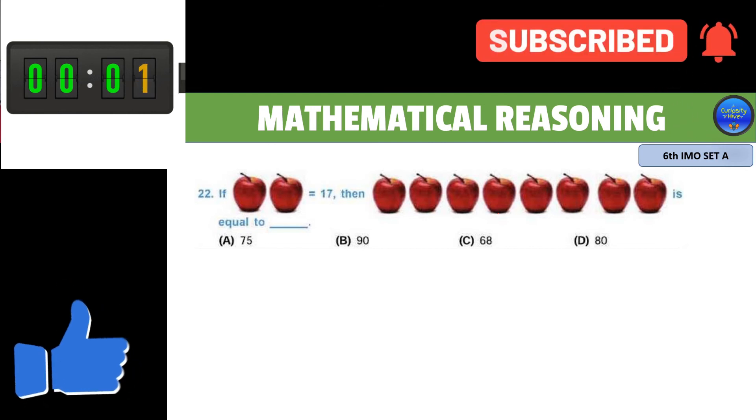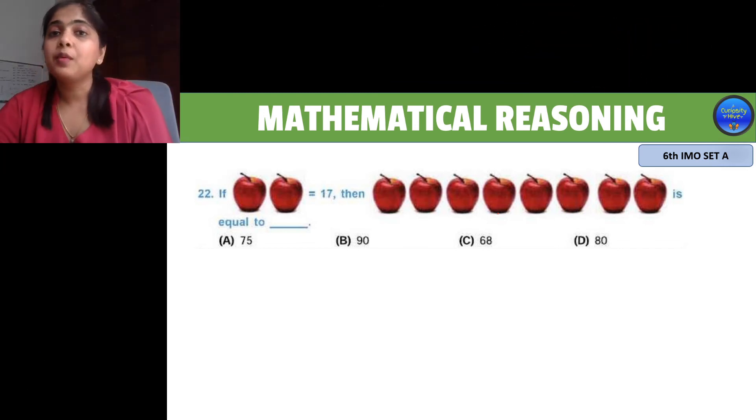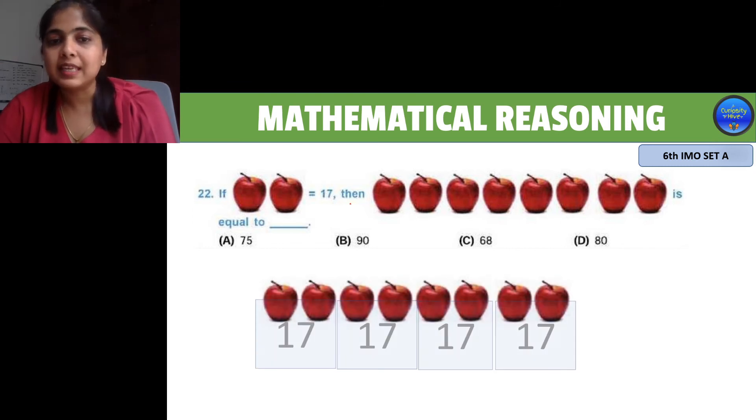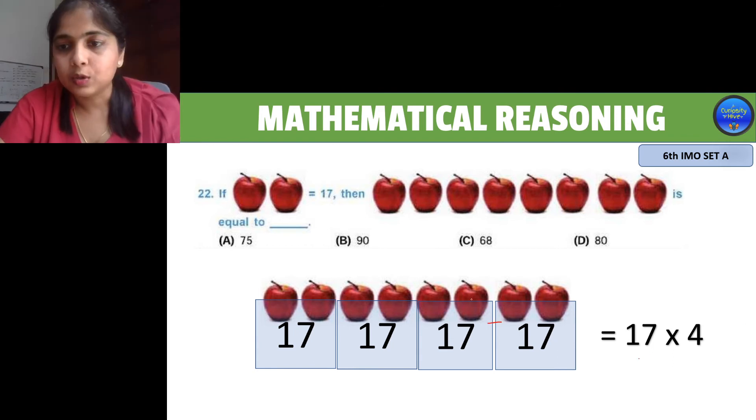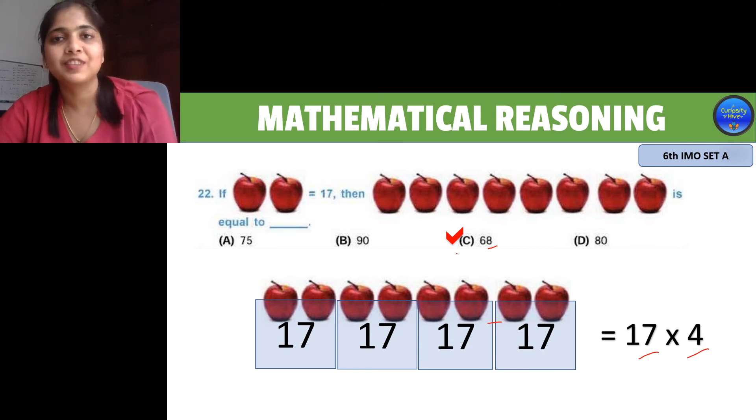The questions I'm throwing at you are not tough, but I want you to solve them in a quicker way. In this case, we know that a pair of apples is 17. If you place all the apples, you'll see there are 4 pairs. 4 pairs means 17 times 4. When you're multiplying, note that 7 times 4 is 28, so your 1's place should be 8, which is only 68 in these options. So your right answer is option C.